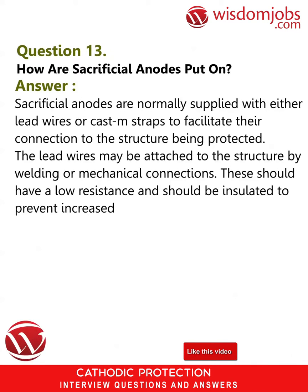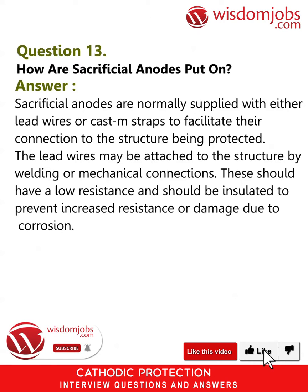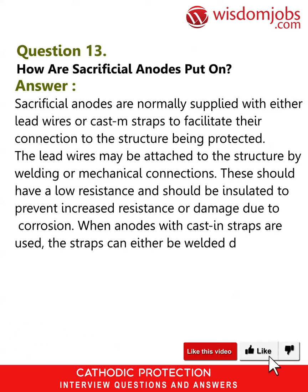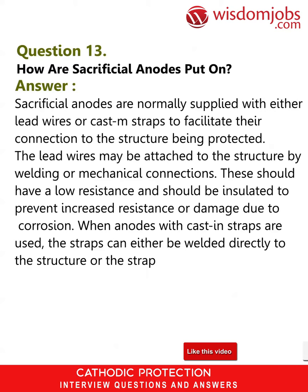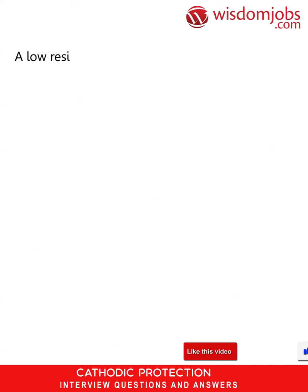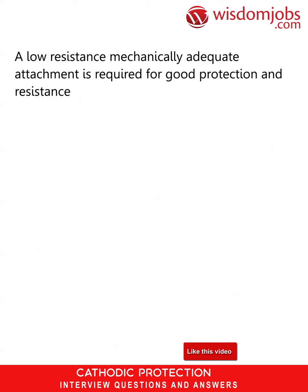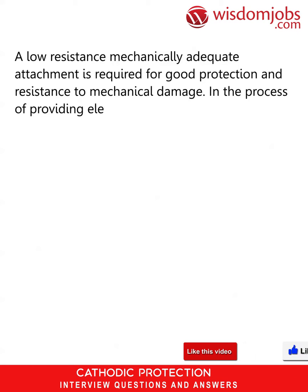These connections should have a low resistance and should be insulated to prevent increased resistance or damage due to corrosion. When anodes with cast metal straps are used, the straps can either be welded directly to the structure, or the straps can be used as locations for attachment. A low resistance, mechanically adequate attachment is required for good protection and resistance to mechanical damage.